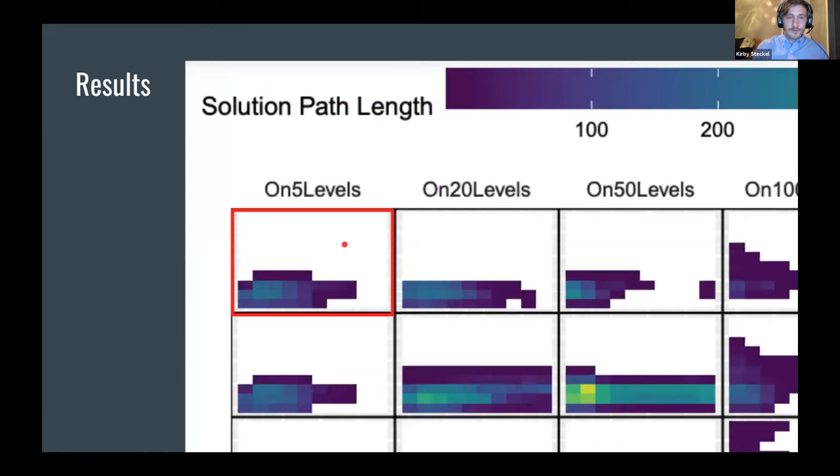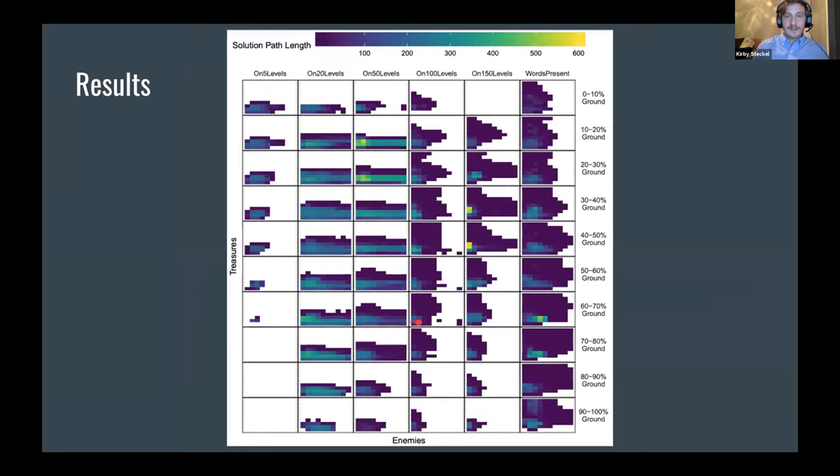And here's a little bit closer view. So each one of these rectangles represents a single level that is placed into a bin. As you can see, the solution path length represents the colors that the boxes are. And as we saw in the plots earlier, the On-20 levels and the On-50 levels have the most light colored squares, which indicates a high solution path. And the words present GAN has very few instances of light colors and it's mostly dark purple because a lot of those levels were not beatable, meaning that they used connectivity for their fitness instead of the A-star path length.